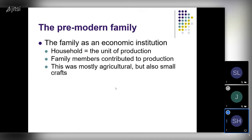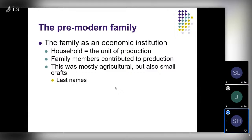One of the ways we know about the link between family and economic activity is through last names. Many last names reflect what people did: Blacksmith, Cooper (barrel maker), Fletcher (arrow maker), Baker, Smith. If your name was John Baker, you were John the baker — that's who you were and what you did. It's also important to remember that almost everybody at this time was desperately poor, living at the margins of survival.